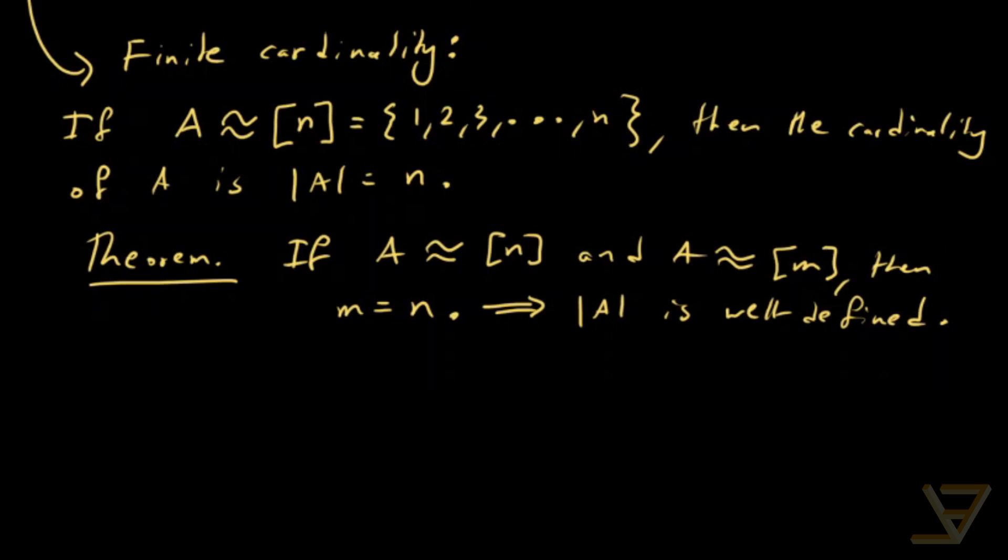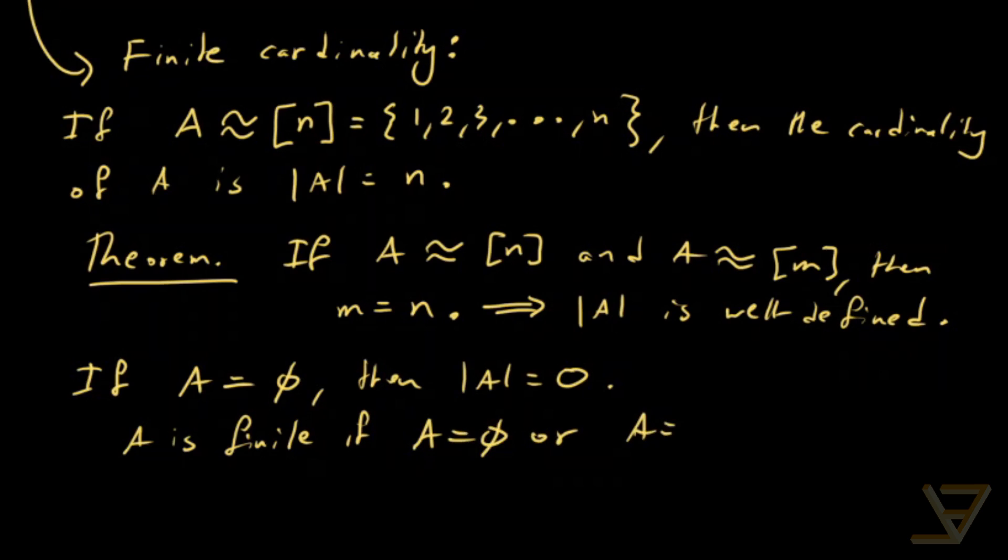And I should also mention that if A is equal to the empty set, then the cardinality of A is equal to 0, and that's also finite. So, A is finite if A is the empty set, or A is equal to some finite section of the positive integers.